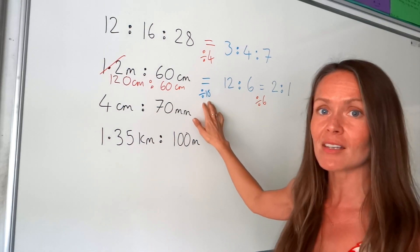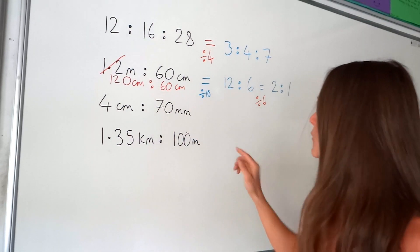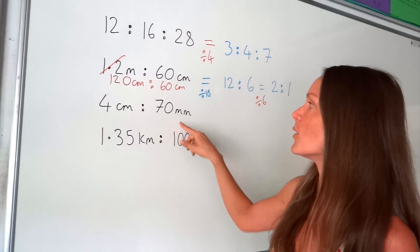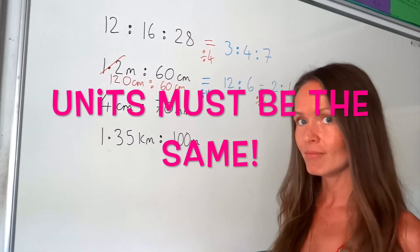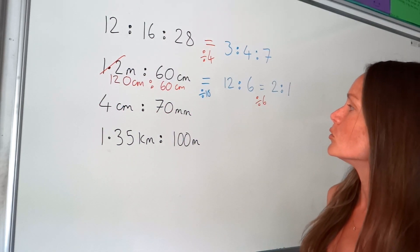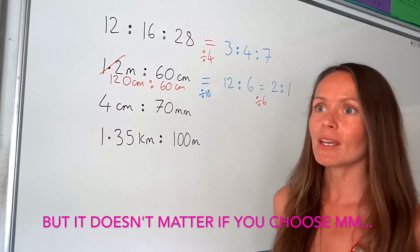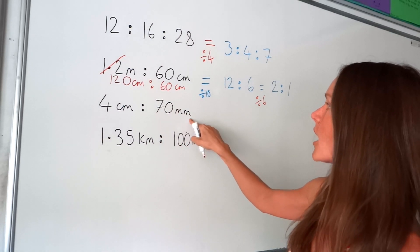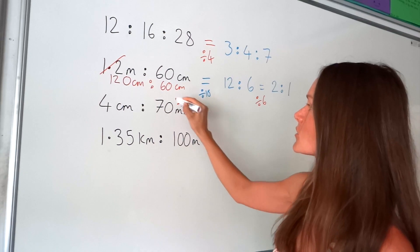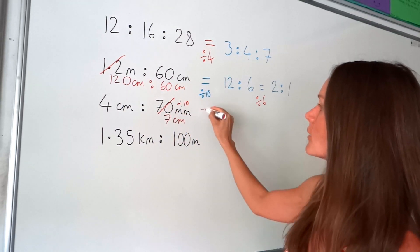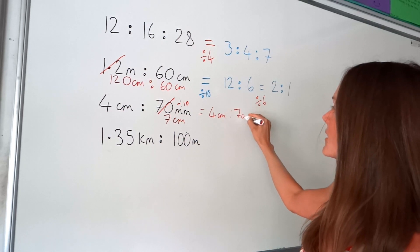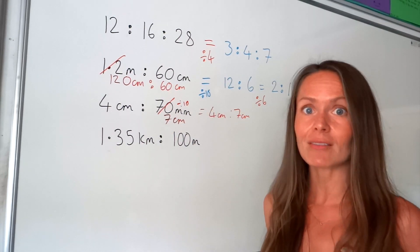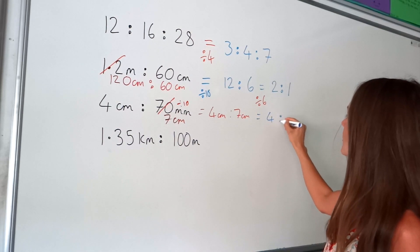If you find a common factor but it isn't the highest common factor, don't panic — just keep simplifying until you get to the end. On this next one, we need to make sure the units are the same. In one centimetre we have 10 millimetres, so to turn 70mm into centimetres I divide by 10, giving me 7. Now I've got 4 centimetres to 7 centimetres. I can't simplify that, so the answer is just 4 to 7. You don't need to write the units in.